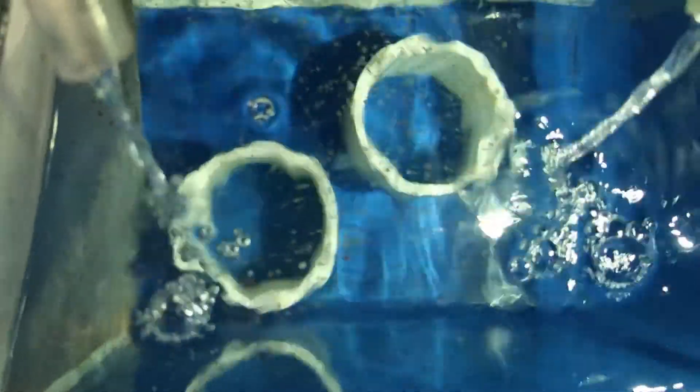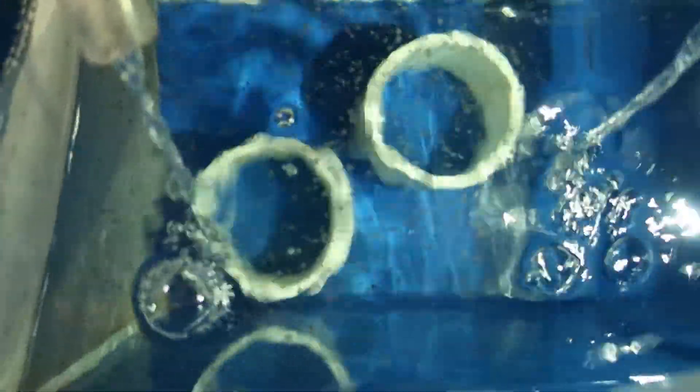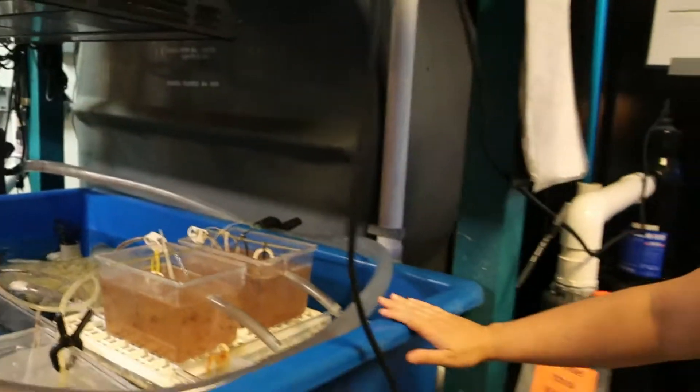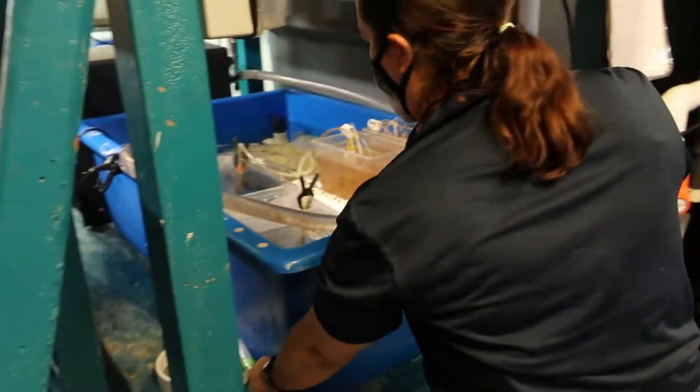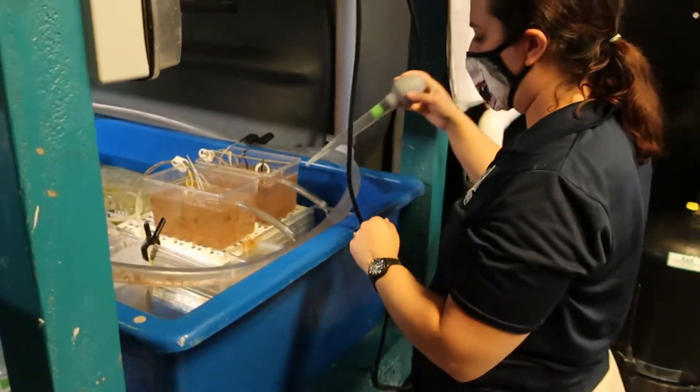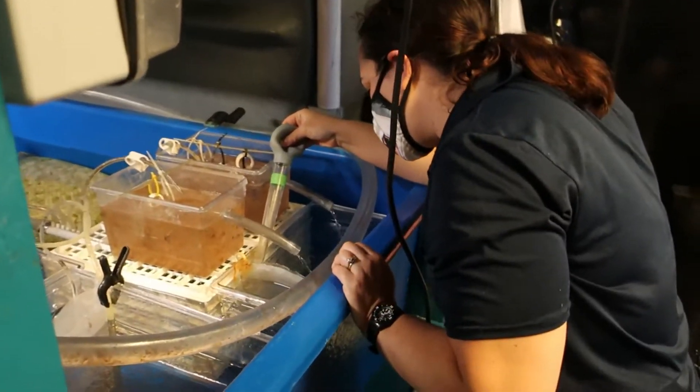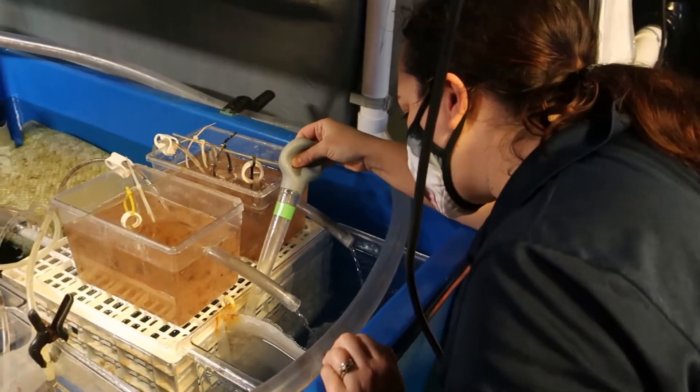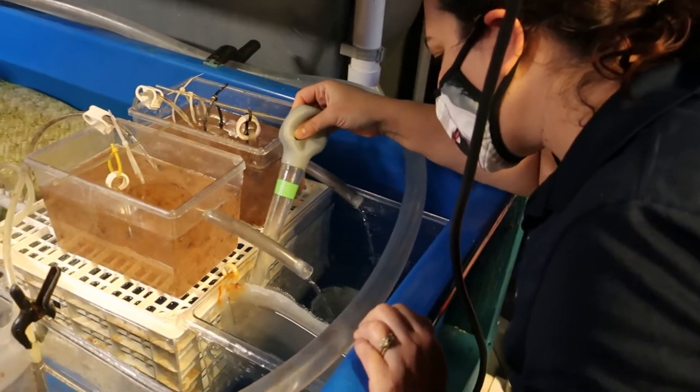These little brown specks here are all individual ephyra. They all, in theory, can grow up to be adult jellyfish. And so they're going to grow pretty slowly. In a month they'll be about the size of a pencil eraser, and they're going to need to be at least an inch in order to go on exhibit.